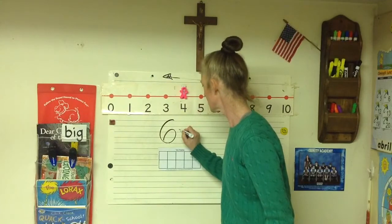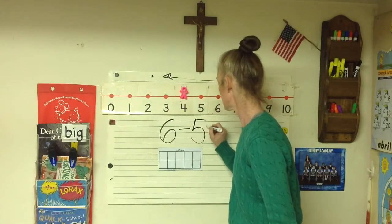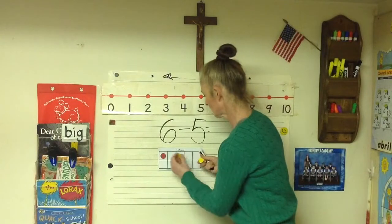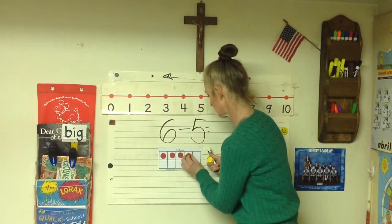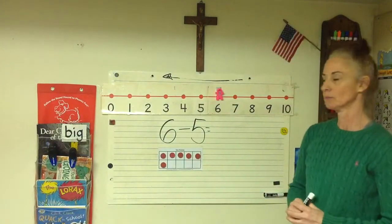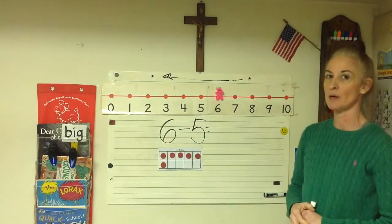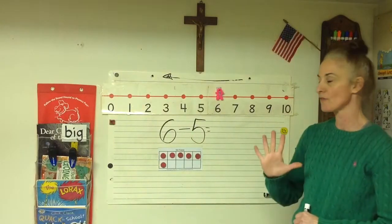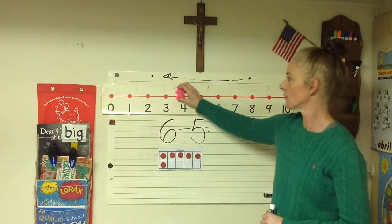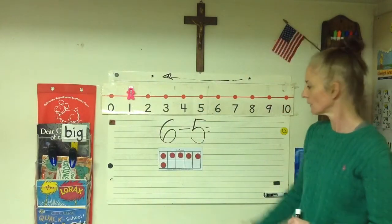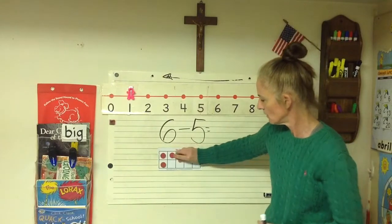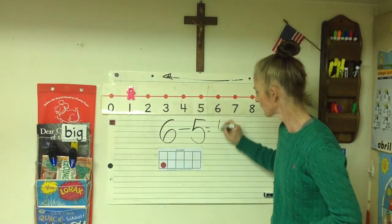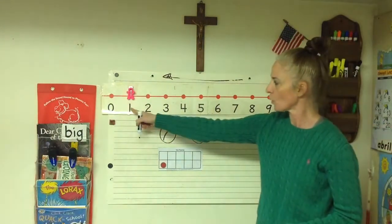Six take away five equals. Six in our ten frame, six on the number line. We go back: two, three, four, five — we're on number one. Let's see what happens when I take five out. Our difference is then one. Six minus five only leaves us one left, and one on the number line.